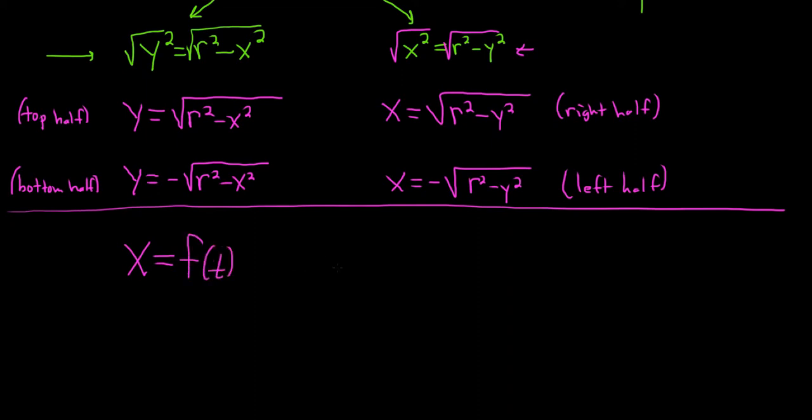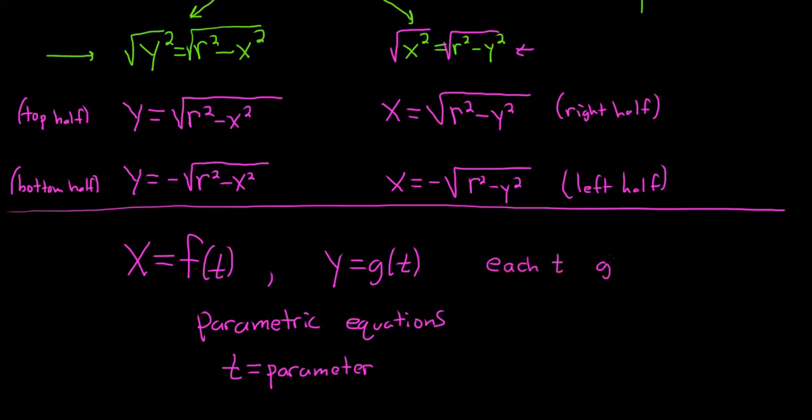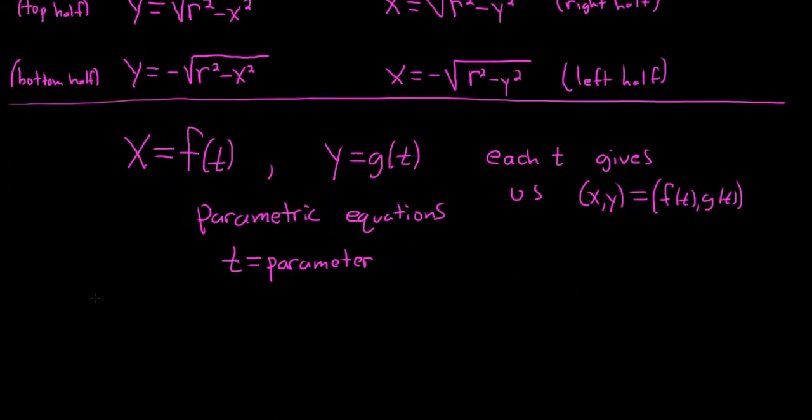Parametric equations allow us to describe graphs in a much more convenient way most of the time. Here's an example. We can let x be a function of time, and we can let y be a function of time. These are called parametric equations. T here has a name, and t is called the parameter. Sometimes you use theta or another letter. Each value of t gives an ordered pair, giving us (x, y), which equals (f(t), g(t)). Each value of t gives us a little point on the graph.